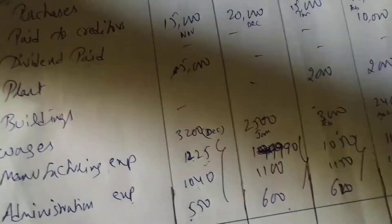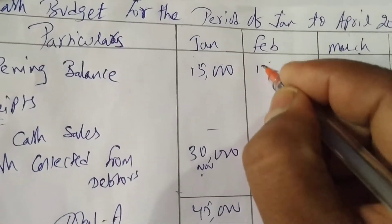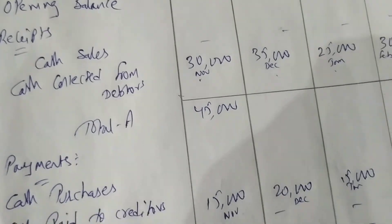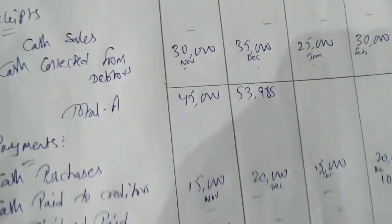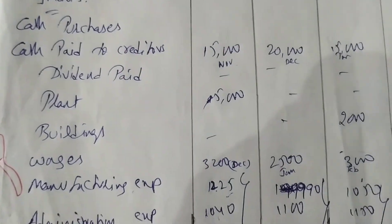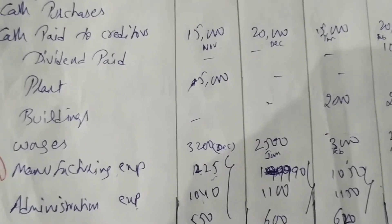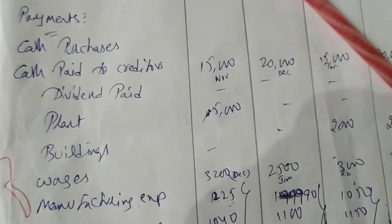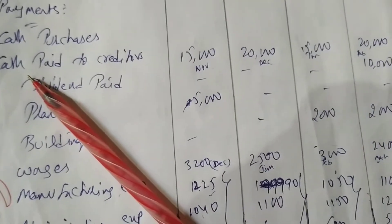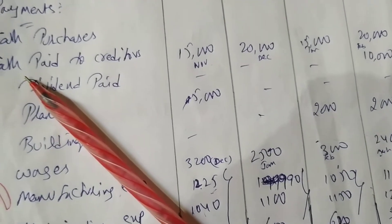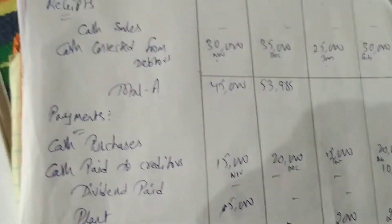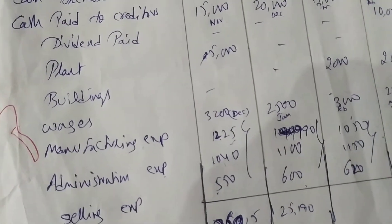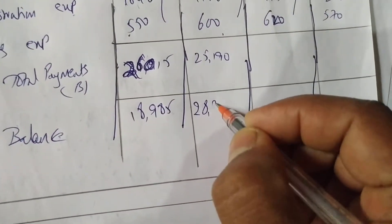February: opening balance 18,985 plus receipts 35,000 gives 53,985. Payments: creditors 20,000; wages 2,500; manufacturing 990; administration 1,100; selling 600 — total 25,190. Closing balance: 53,985 minus 25,190 equals 28,795.